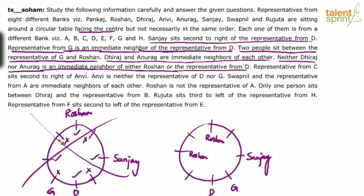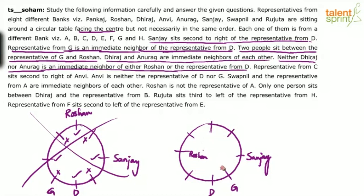In Case 2, there are two possible positions for Roshan. If Roshan comes in the first sub-position, D and Roshan end up opposite each other, and Dheeraj and Anurag still cannot be placed consecutively due to the same constraint. So that sub-possibility is also eliminated, and Roshan must take the confirmed position in Case 2.